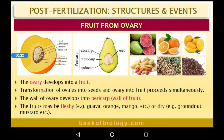The ovary develops into a fruit. Both the transformation of ovules into seeds and ovary into fruits take place simultaneously. The wall of the ovary develops into pericarp — that is, the wall of the fruit.